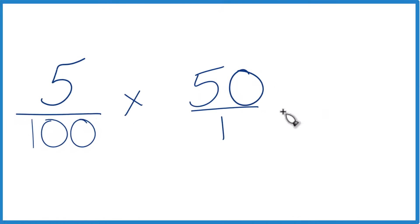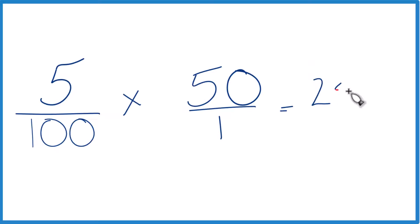5 times 50, that's 250, and then 100 times 1, that's 100. So that's equal to 5% of 50.